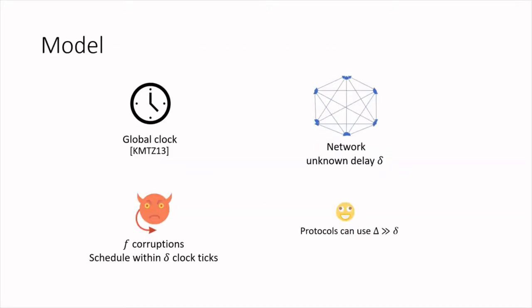The model we consider is a model of UC functionalities. We borrowed the synchronous clock introduced by Katz, Maurer, Tachman, and Zikas in 2013, and we model the actual network delay with a communication network that has delay small delta which is unknown to the honest parties — so protocols cannot use small delta. However, we assume that parties know a conservative upper bound big delta, which can be thought of as much larger than the actual network delay small delta. We assume a threshold adversary which can corrupt up to f parties in an arbitrary manner and can also schedule messages arbitrarily but within small delta clock ticks.